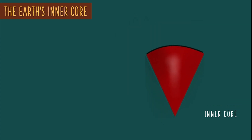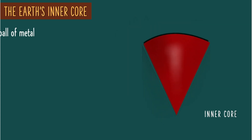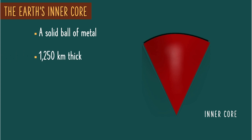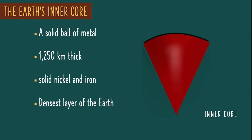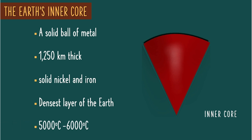The inner core is a solid ball of metal because of intense pressure. It is 1,200 kilometers thick, made of solid nickel and iron. It is the densest layer of the Earth, and its average temperature is 5,000 degrees Celsius to 6,000 degrees Celsius — high enough to melt everything in the outer core.